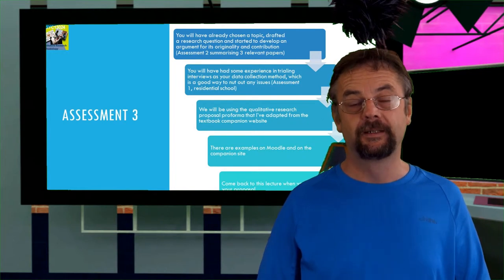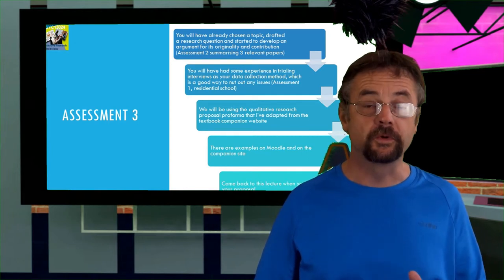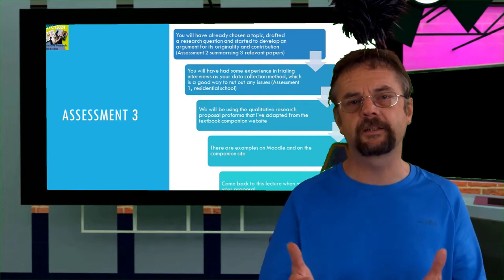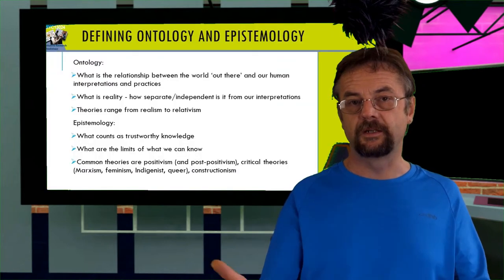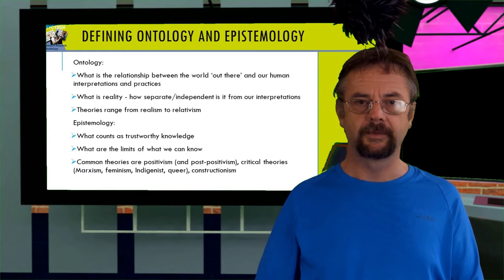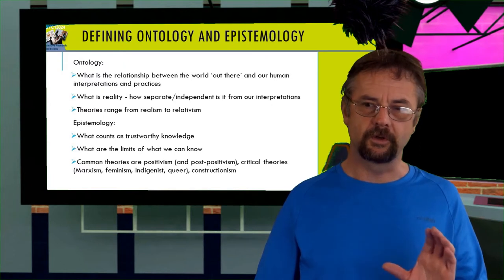The proposal you'll write for assessment three won't actually be a full proposal. There'll be two bits that you would ordinarily have to write for a proposal that you won't have to write for assessment three. The first is methodology, all that stuff we did in lecture one, which helps you to make an argument about the methodological approach that you're adopting. Here there's an expectation in a research proposal, a full research proposal, you'll be making your argument about the ontological and epistemological position you're adopting, which then justifies the methodology or explains the methodology that you're using. So you don't do that for our assessment. That's the bit of the proposal we're not going to do.